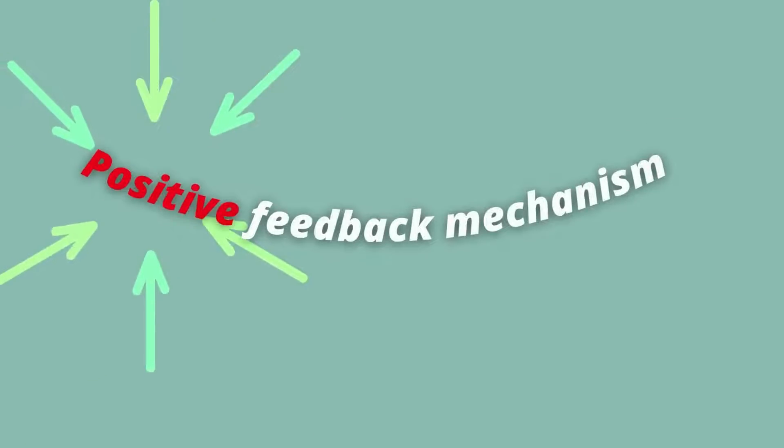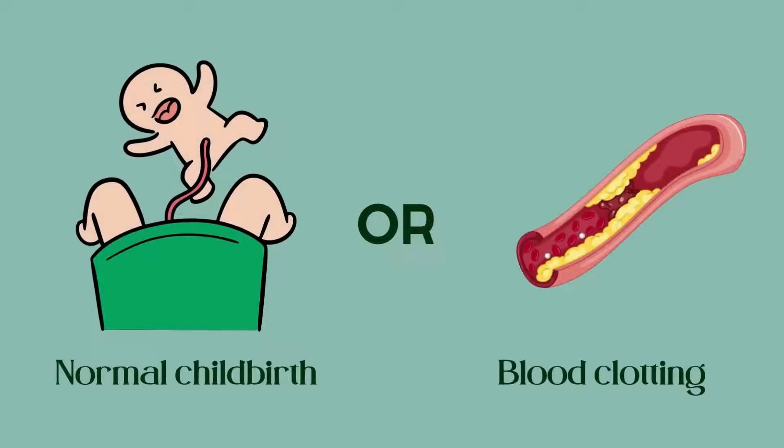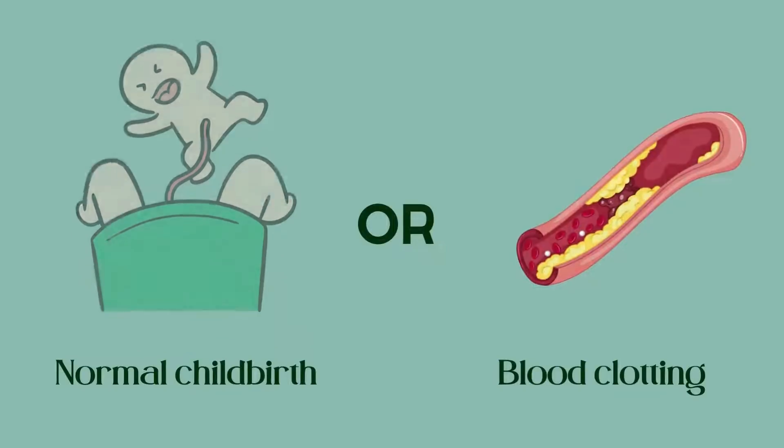This type of feedback mechanism is less common in our body than the negative feedback mechanism. Actually, the positive feedback mechanism only occurs during normal childbirth or in blood clotting. Later in this video I will explain how this type of feedback mechanism occurs during normal childbirth.